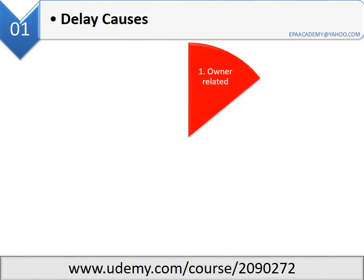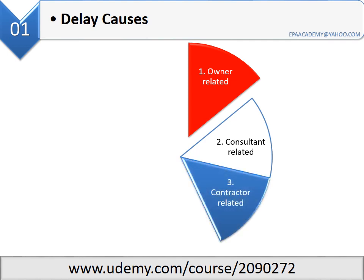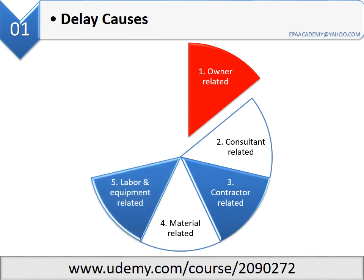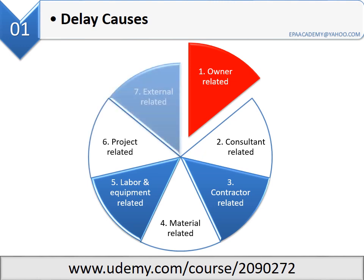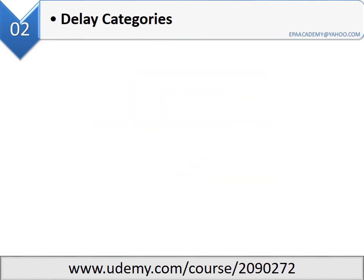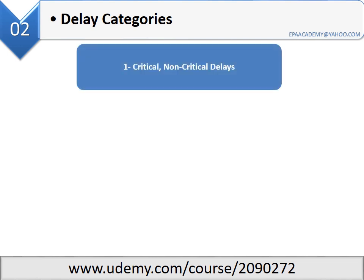First station: delay causes. There are seven main factors that cause delays in construction projects: one, owner-related factor; two, consultant-related factor; three, contractor-related factor; four, material-related factor; five, labor and equipment-related factor; six, project-related factor; seven, external-related factor.